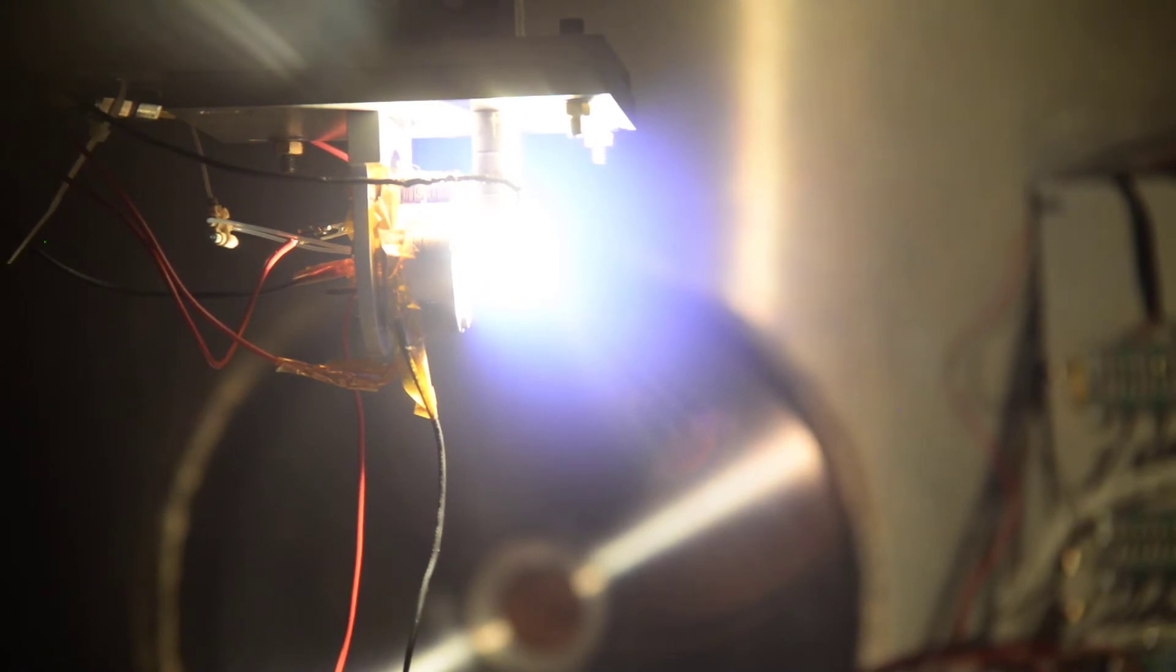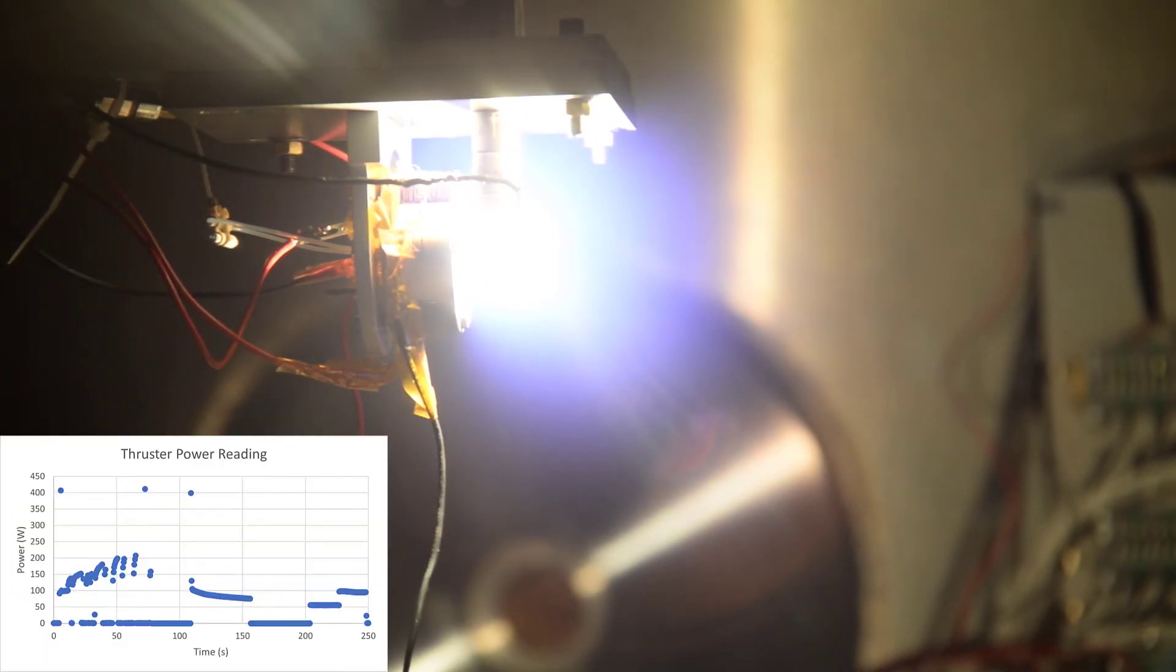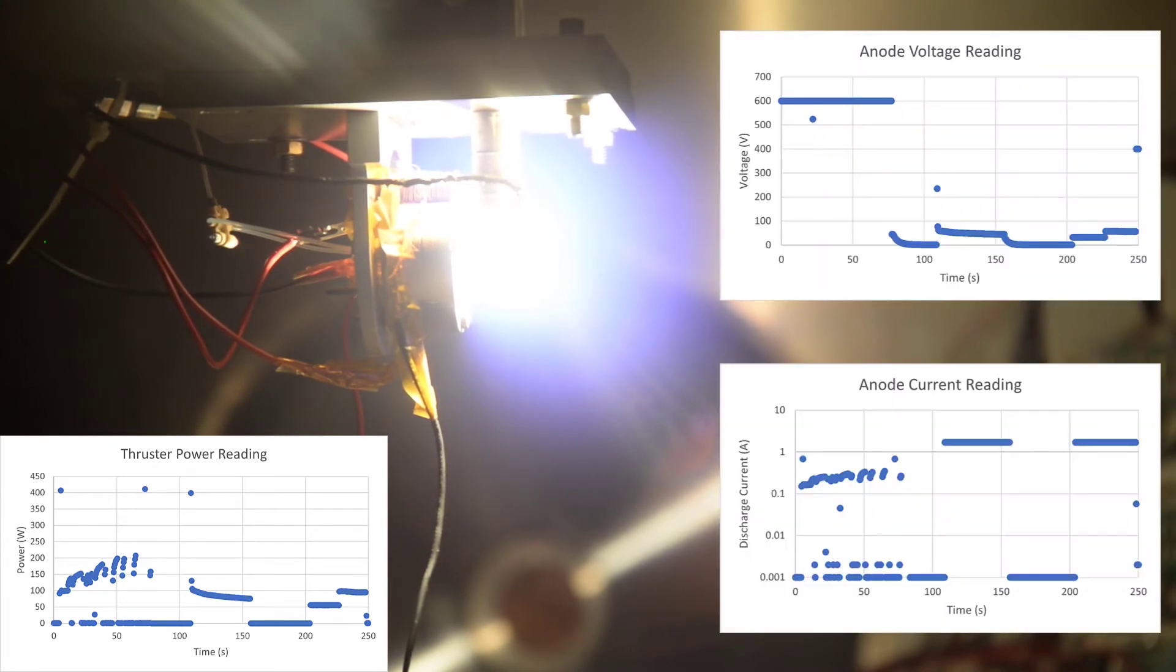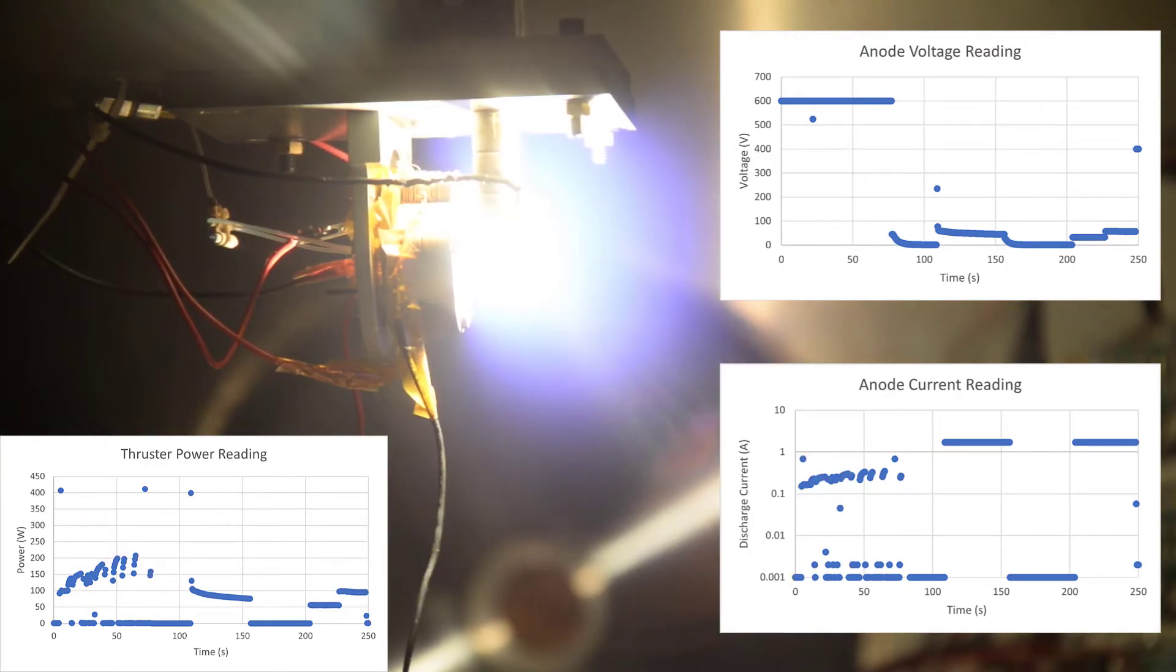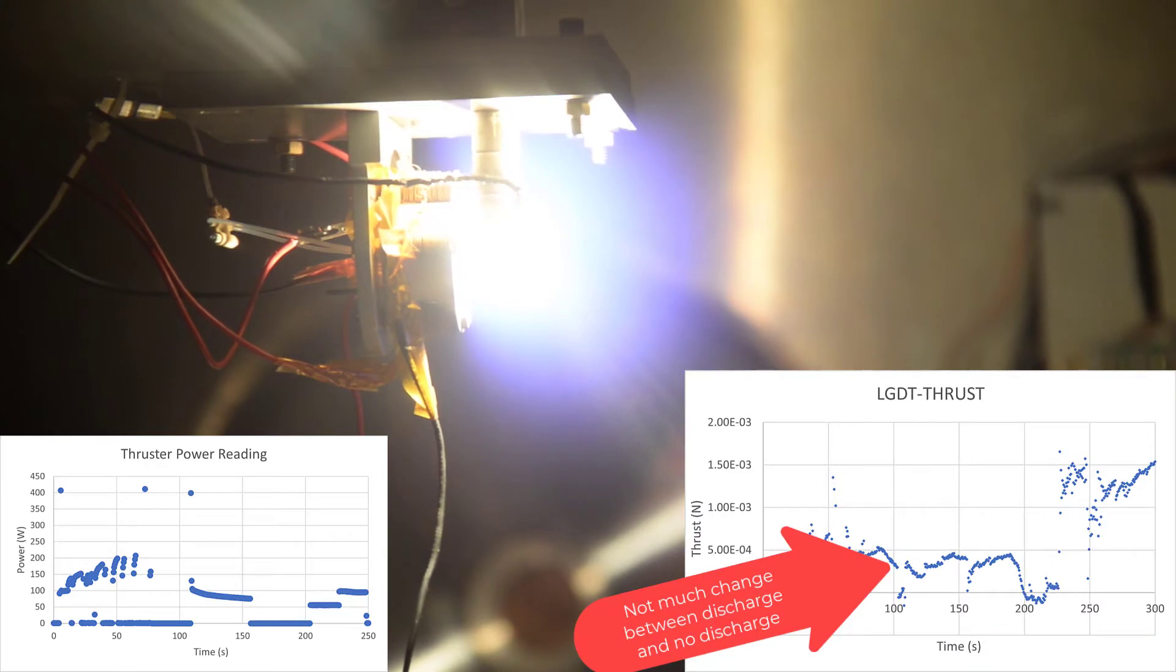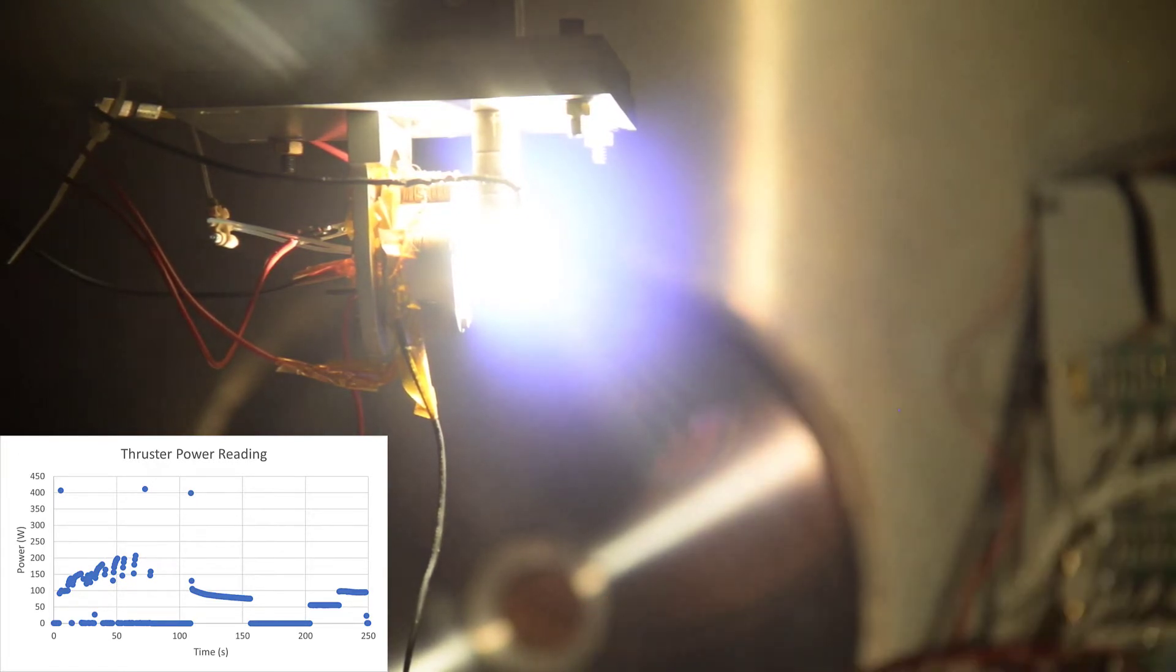So for the next 30 seconds, you'll see a pretty steady discharge, as you can see from the thruster power reading. The voltage ends up going down, and the current reading ends up going up. The magnets aren't on for this part, and I didn't really notice any significant thrust for this part. So I don't really know if this was doing anything other than just general discharge.